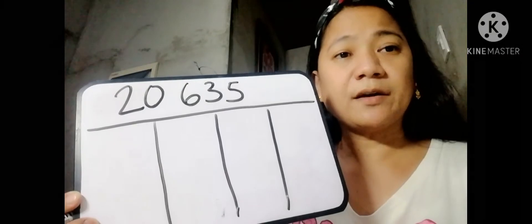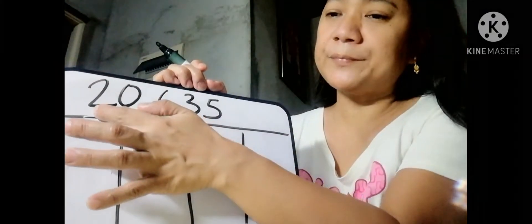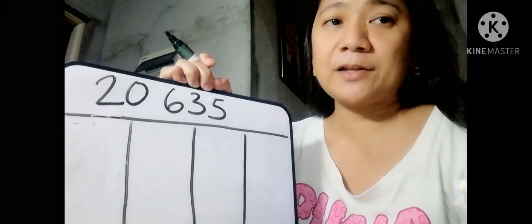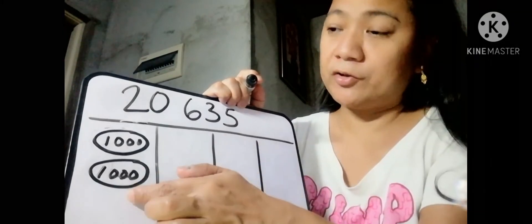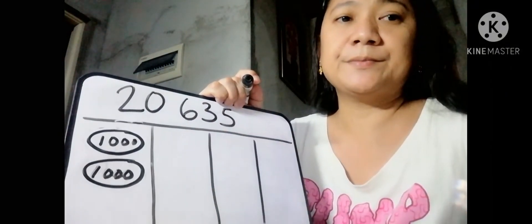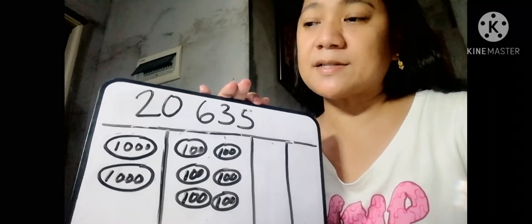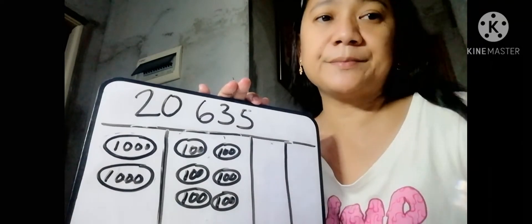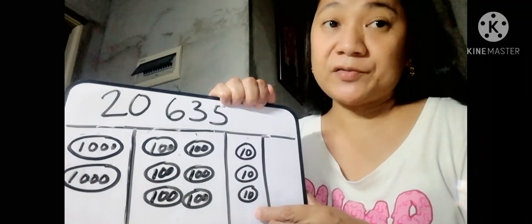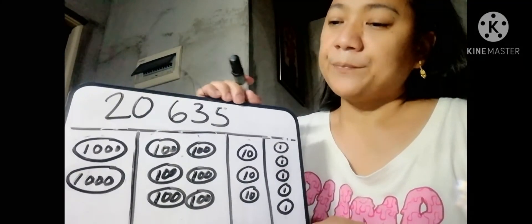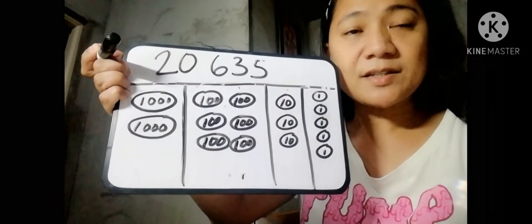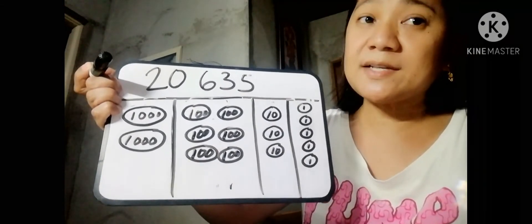Let us now draw a number disk. Since the 10,000 place has a value of 2, we will draw 2 disks to represent its value. So these are the disks I drew to represent the 10,000 value. The thousands place has a value of 0. The hundreds place has a value of 6, so we draw 6 disks. The tens place was represented by 3, so we draw 3 disks. And the ones place has a 5, so we draw 5 disks.